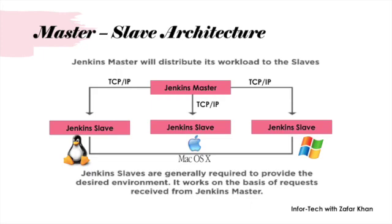Jenkins master gives instructions to Jenkins slave and keeps an eye on its working process. It also creates a list of build jobs, assigns those jobs to slaves, and manages the pipeline process. The Jenkins slave takes commands from the Jenkins master — its main work is to execute the build job and deploy it as per the commands received from the master.